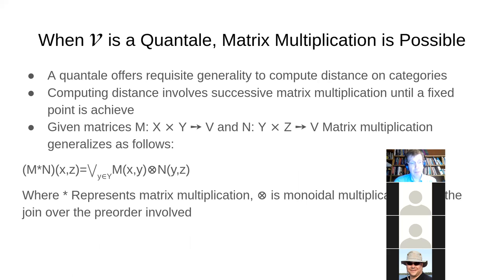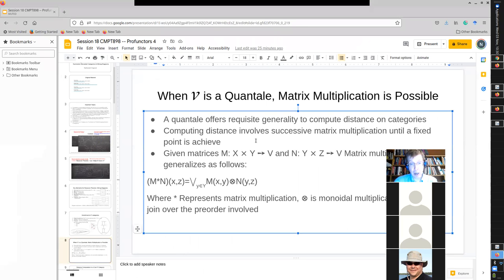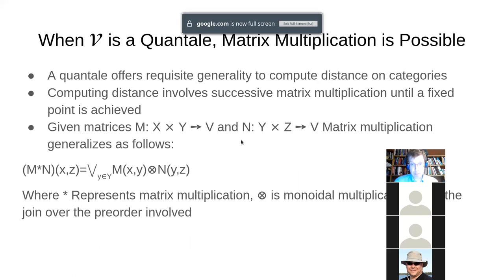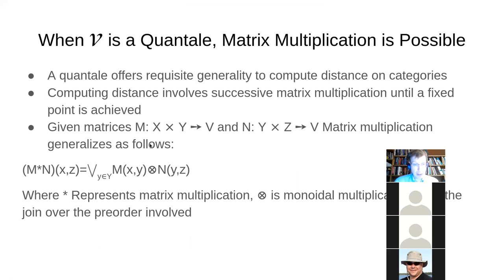If we go to quantals — which got explicated more fully in the book — we can have additional nice properties. Quantals basically allow for distribution over meets or joins and provide us this generality to compute distance on categories. The notion of distance will be different for a cost category, where it might represent distance in some sense, versus a set category, where it might represent the ways — the modalities — by which we can get from Saskatoon to Sydney or Seattle. Computing distance involves matrix multiplication until a certain fixed point is achieved.